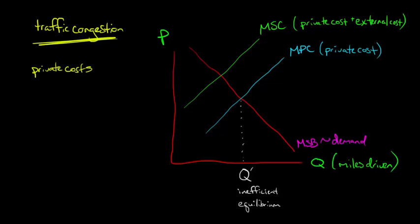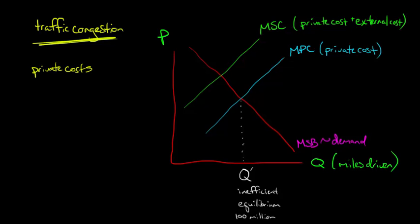Let's say Q prime is a hundred million miles or something like that. What is socially optimal? Socially optimal is where marginal social cost equals marginal social benefit — that's where we want to be with the number of miles driven, considering everybody, not just the individual. That intersection point — where the marginal social benefit curve intersects with the marginal social cost curve — is our socially efficient quantity. That's our optimal quantity, but it's not where we're currently at.